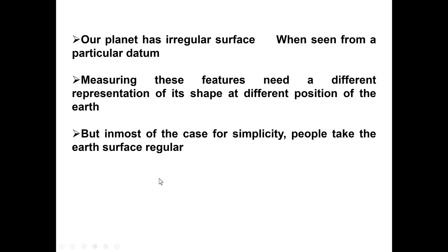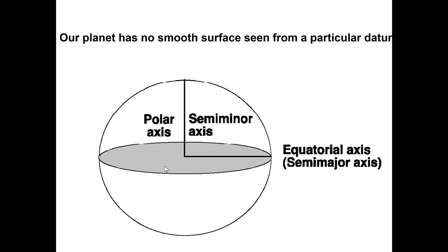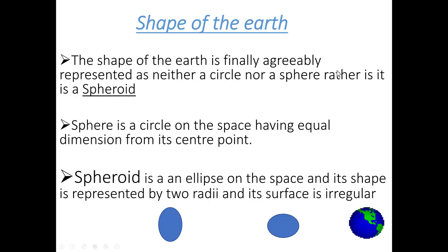But in most cases, for simplicity, people take the surface as regular. We have a polar axis, a minor axis, an equatorial axis. We also have a uniform surface from our particular reference. We have that surface here.